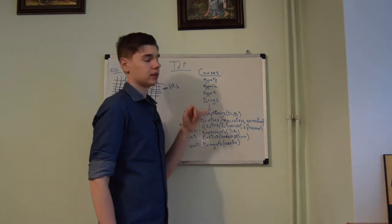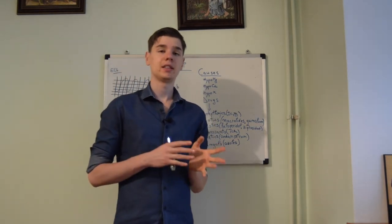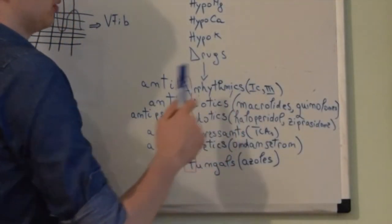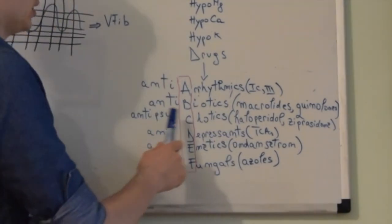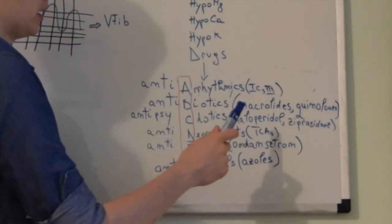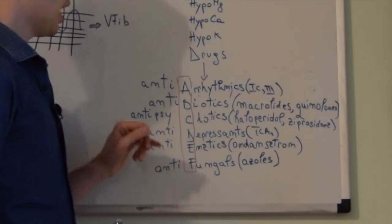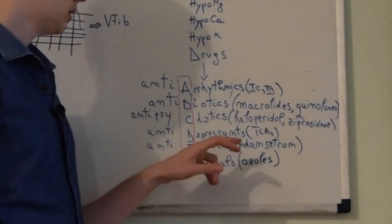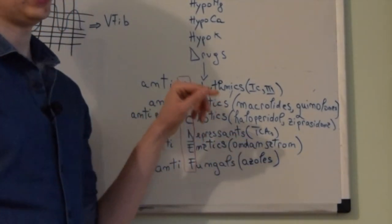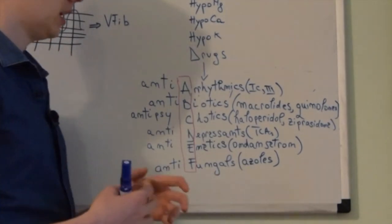Lastly, drugs can cause Torsades de Pointes. Here we have the mnemonic: anti-ABCDEF. Namely, antiarrhythmics class 1C and 3; antibiotics — macrolides and quinolones; antipsychotics — first generation haloperidol and second generation ziprasidone; antidepressants — TCAs; antiemetics — 5-HT3 antagonists such as ondansetron; and antifungals, namely azoles.